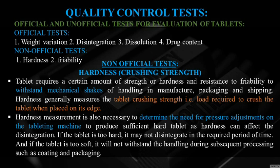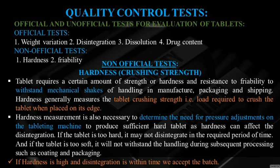Hardness measurement is necessary to determine the need for pressure adjustment on the tableting machine to find the optimum compression pressure. If hard tablets are produced, pressure is reduced; if soft tablets are produced, pressure is increased. Hardness can also affect disintegration — if the tablet is too hard, it may not disintegrate in the required period of time, and if too soft, it will not withstand handling during manufacturing, packaging, shipping, and subsequent processing such as coating.